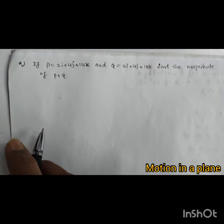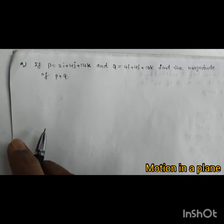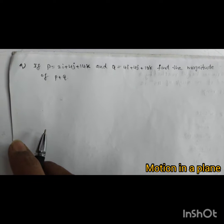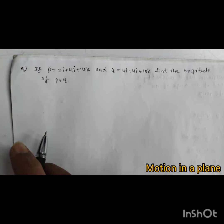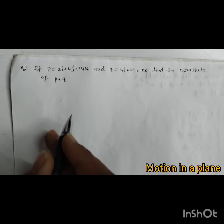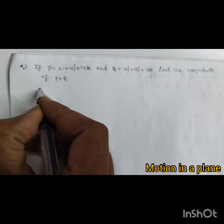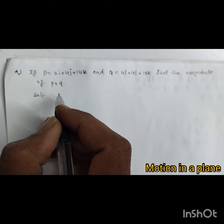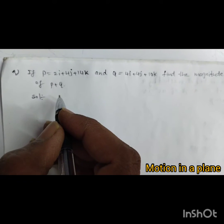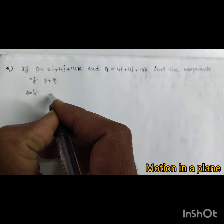If p equals 2i plus 4j plus 14k and q equals 4i plus 4j plus 10k, find the magnitude of p plus q. First we will do p plus q, so we have to add p vector and q vector.